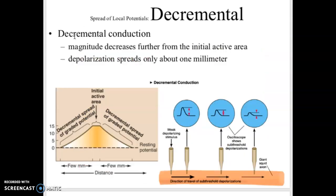This slide is just showing the process that happens when a local potential happens. As it spreads, it decreases in size. The initial activation area here on the graph is going to be the highest part, and then as the local potential spreads along the membrane, it decreases in magnitude.